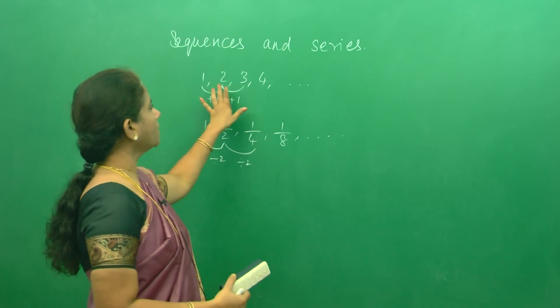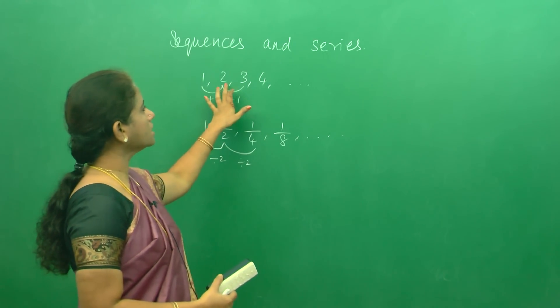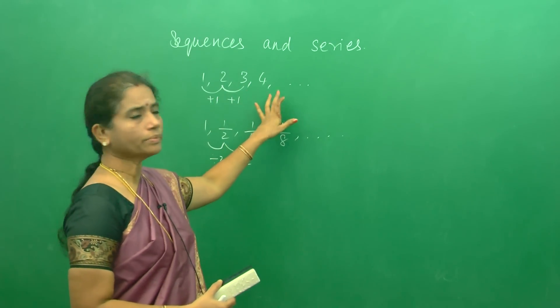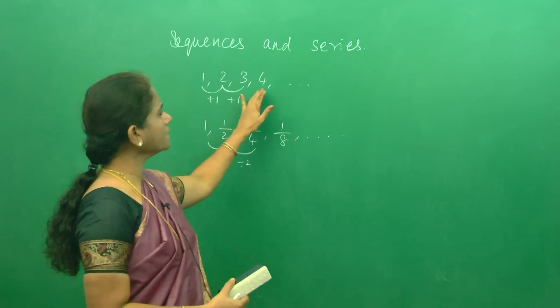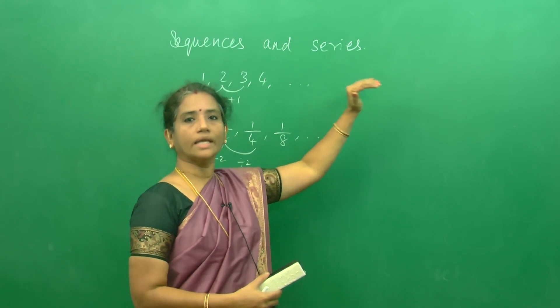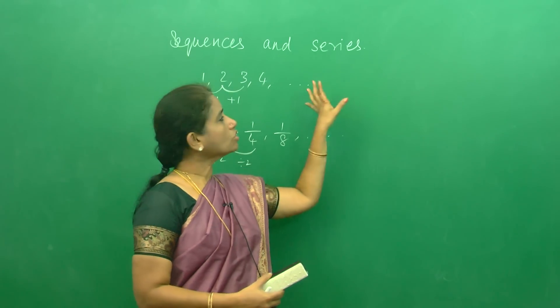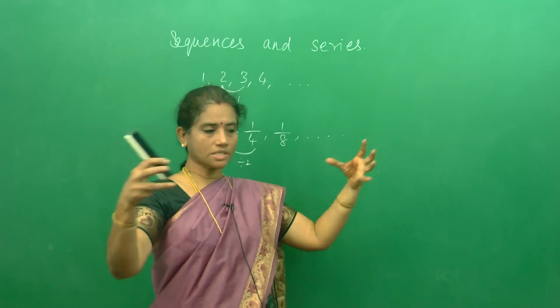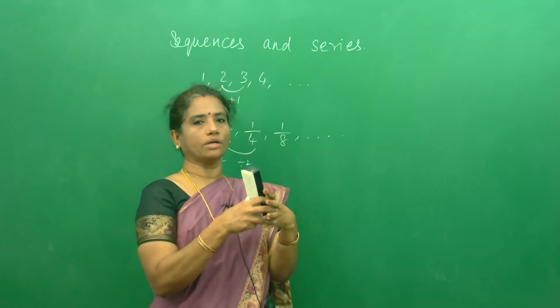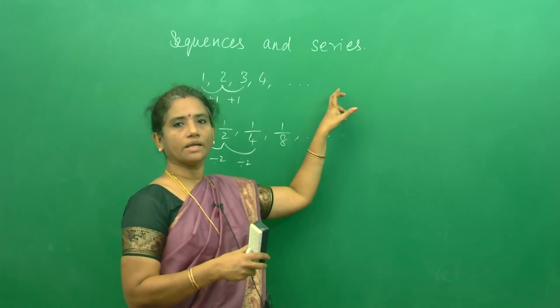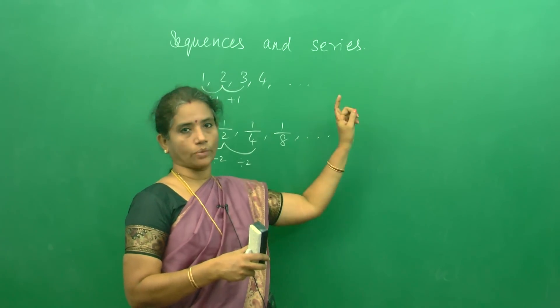So we can say this sequence — 1, 1/2, 1/4, 1/8 — is a convergent sequence because the terms go on decreasing. For the sequence 1, 2, 3, 4, all the terms go on increasing, so this cannot converge. Converge means come to a point. So this will be a divergent sequence.